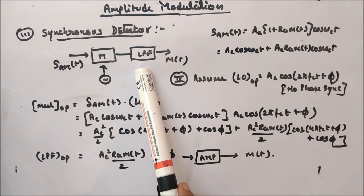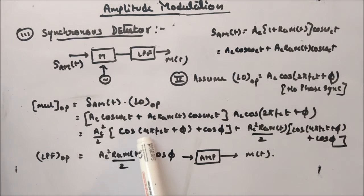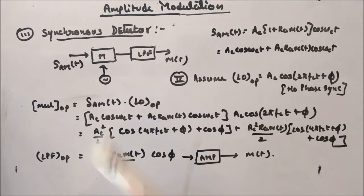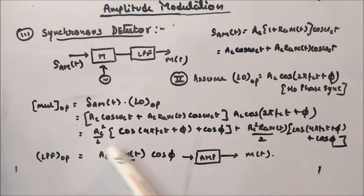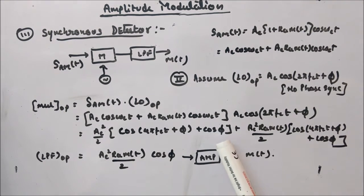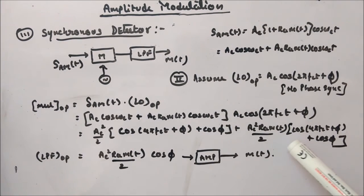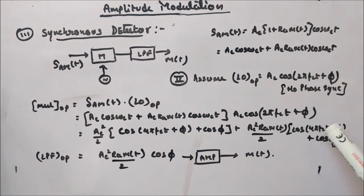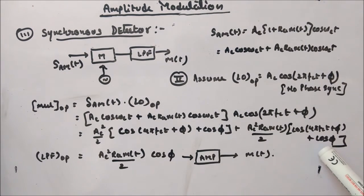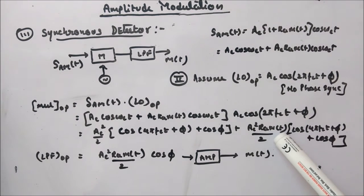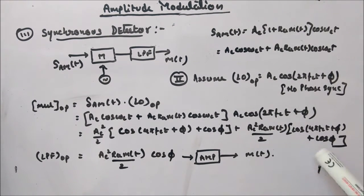Passing this through the low-pass filter: the terms containing 2fc are blocked since 2fc is much greater than W. The term Ac²/2·cos(φ) is a DC constant and is blocked by a capacitor. Similarly, the other 2fc term is rejected. What remains is the term Ac²·ka·m(t)/2·cos(φ), which has bandwidth W due to m(t) and therefore passes through the LPF.